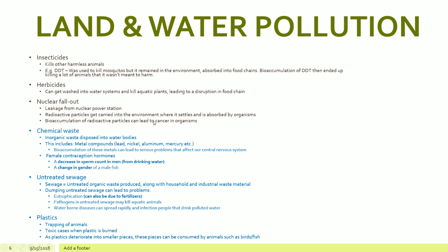On pollution — a lot of these are quite self-explanatory, so you can pause the video for more detail. Insecticides, other than killing the insects they're meant to kill, can kill other harmless animals. DDT was an example — it was meant to kill certain mosquitoes, but it got absorbed into the food chain and bioaccumulation of this substance ended up killing a lot of animals it wasn't meant to harm. It is now banned in most areas.